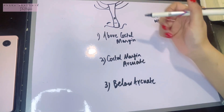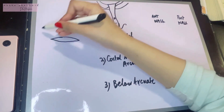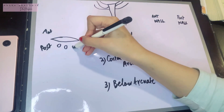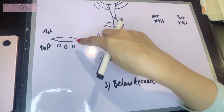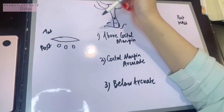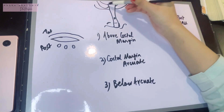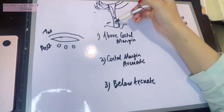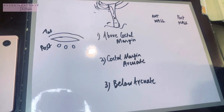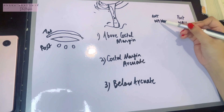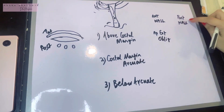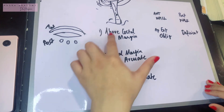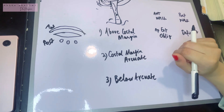Above the costal margin, the rectus abdominis lies directly on the fifth, sixth, and seventh costal cartilages, which form the posterior part. The anterior wall is formed by the external oblique aponeurosis. The external oblique muscle originates from the outer surfaces of the lower ribs and forms the anterior part of the rectus sheath throughout all regions. So above the costal margin, the anterior wall is the external oblique aponeurosis, and the posterior wall is deficient.